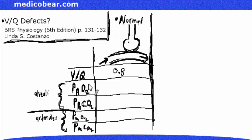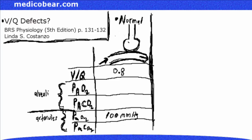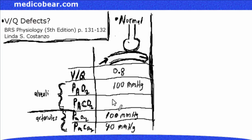Ventilation-perfusion is a ratio — the ratio of alveolar ventilation to pulmonary blood flow. Normally, the VQ ratio is 0.8. This results in an arterial partial pressure of oxygen of 100 mmHg, an arterial partial pressure of carbon dioxide of 40 mmHg, an alveolar partial pressure of oxygen of 100 mmHg, and an alveolar partial pressure of carbon dioxide of 40 mmHg. This is the ideal, normal situation.